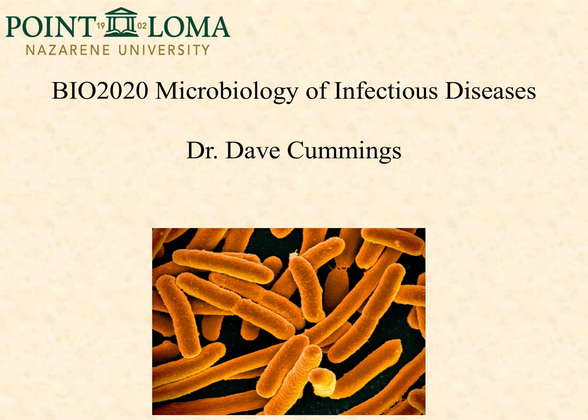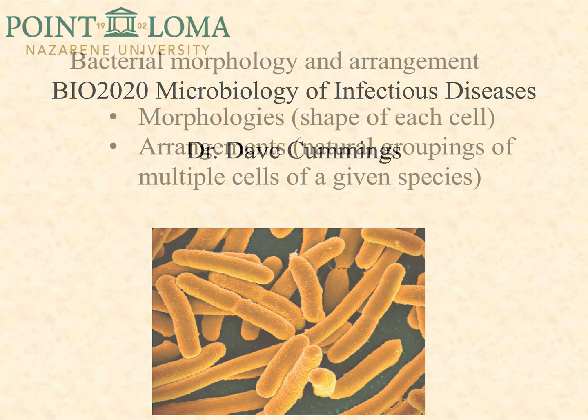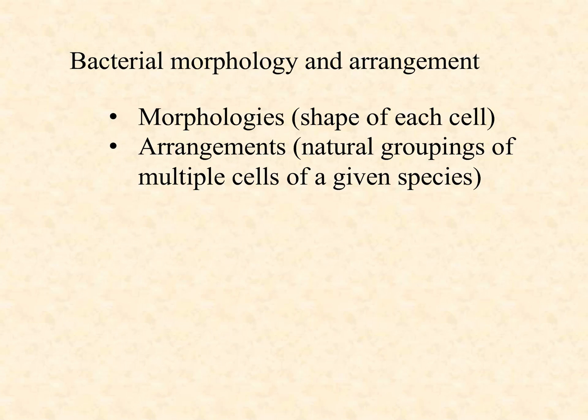Hey, this is Dr. Cummings from PLNU, Microbiology of Infectious Diseases. In this video, I want to talk about the idea of bacterial morphology and arrangement. These are just fancy words to refer to either the shape of an individual cell — that's morphology — or with arrangement, we're talking about how bacteria of the same population, the same species, form natural groupings of multiple cells as a result of binary fission. Both of these are really helpful for identification of the different microorganisms that we look at.